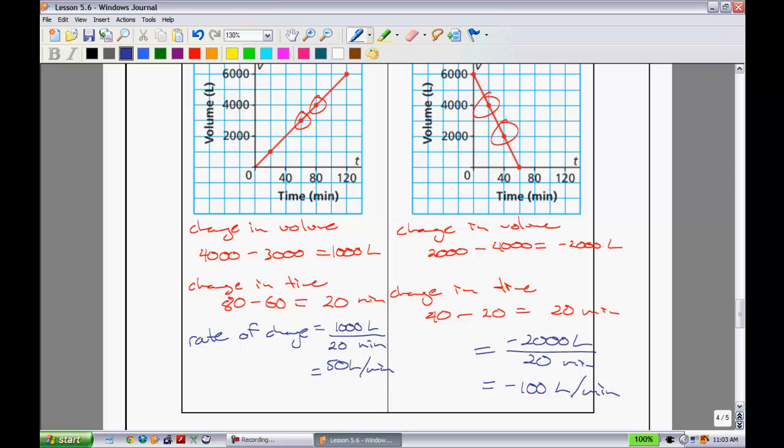So that concludes this lesson. We looked at basically how you can determine if something is a linear relation or not. We also discussed what some graphs will look like for this, and we determined how you can find the constant rate of change.